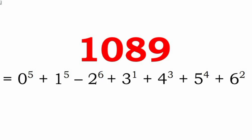This is the next representation where we can write 1089 as 0 to the power of 5 plus 1 to the power of 5 minus 2 to the power of 6 plus 3 to the power of 1 plus 4 to the power of 3 plus 5 to the power of 4 plus 6 squared. Here, all the digits from 0 to 6 are used.